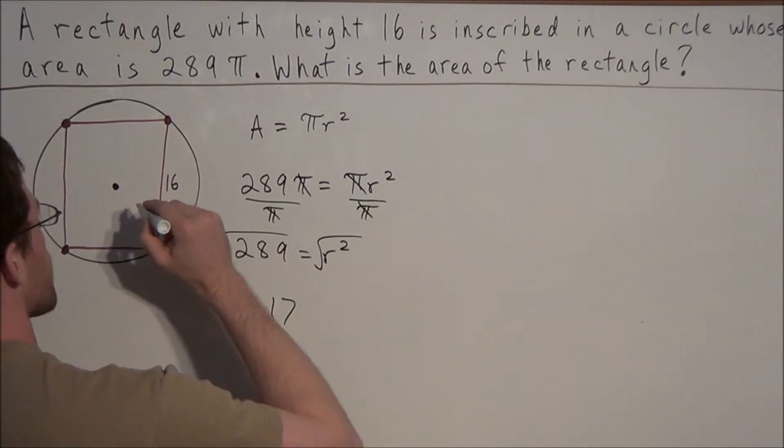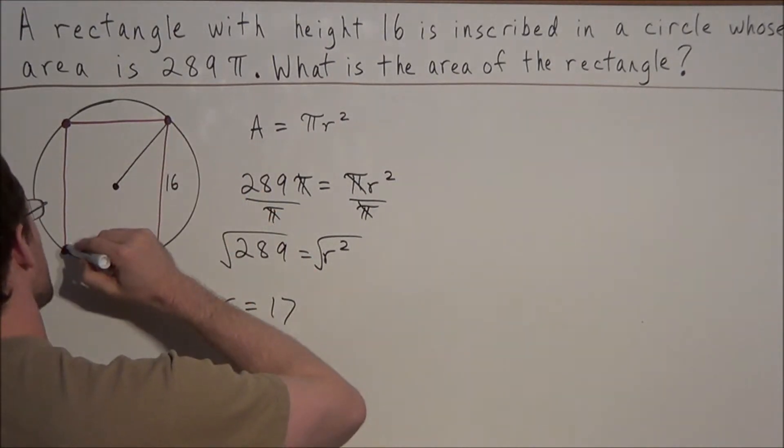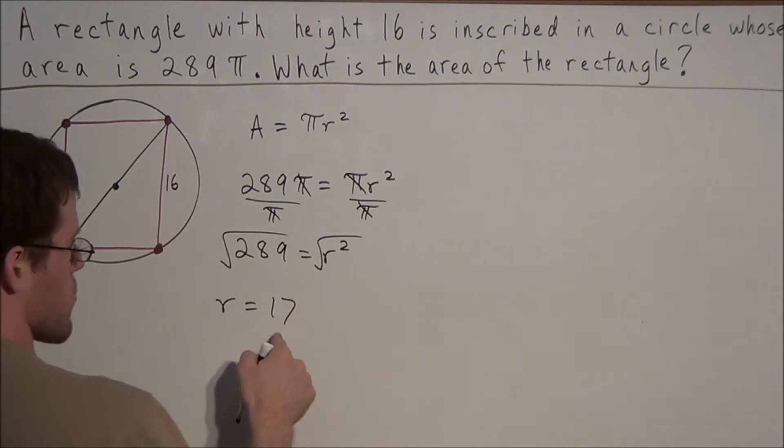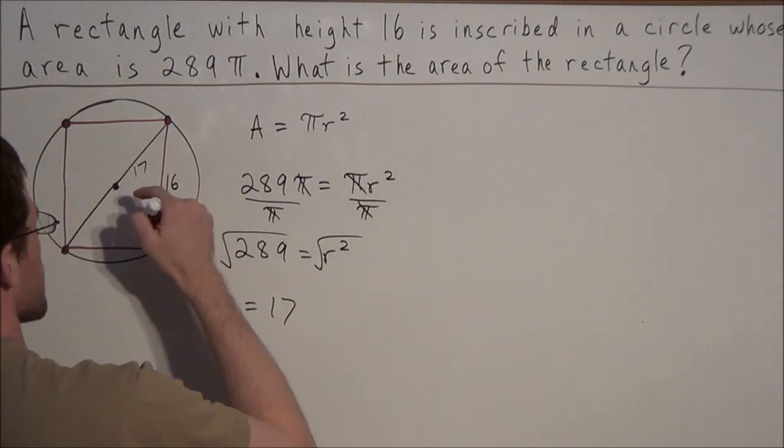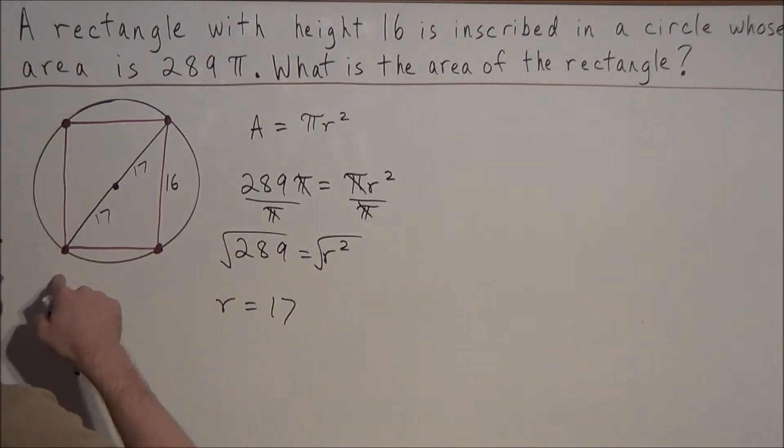So now with this information, we can draw the center of our circle, and we can construct two radii. And we know that the radius is 17, so this piece is 17, and the other piece from the center to the end is also 17.